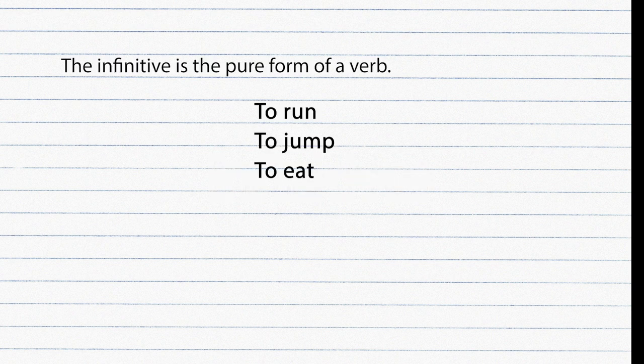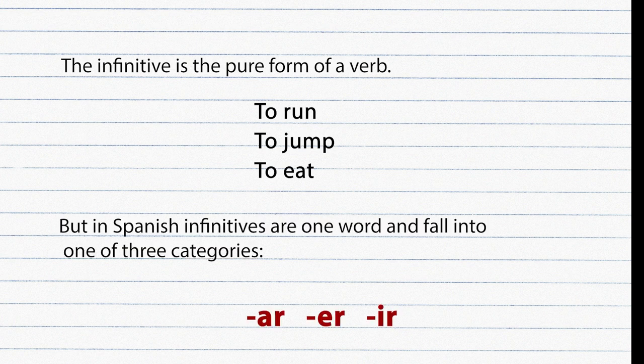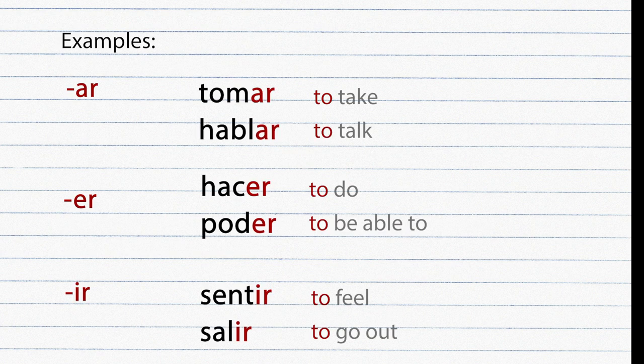Infinitives. The infinitive is the pure form of a verb. In English, infinitives start with 'to' — to run, to jump, to eat. In Spanish, infinitives are one word and fall into three categories: AR verbs, ER verbs, and IR verbs. Examples: Tomar, Hablar (AR); Hacer, Poder (ER); Sentir, Salir (IR).